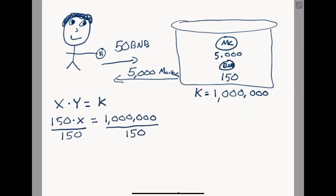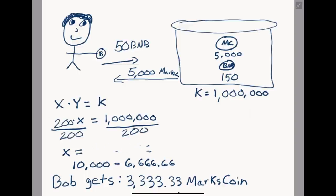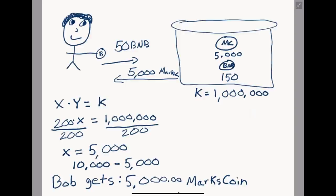By dividing both sides by 150, we can see that the amount of Mark's Coin left in the pool after this transaction needs to be 6,666 and two-thirds, which tells us Bob will only receive 3,333 and one-third Mark's Coin instead of the 5,000 he had hoped for. The more BNB Bob tries to put in, the worse a price he will get back — that's slippage. If he doubles up and puts in 100 BNB, he will only receive 5,000 Mark's Coin, or half of what the coin's actual value is.